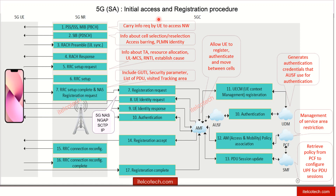Hi, in this lecture we'll look into how the call is flowing between the user to the radio access network and then to the core network during the initial access and the registration procedure. We split this call flow into two parts. The first will talk about the call flow happening between the user equipment and the radio access network, and we'll cover the first seven sections quickly.